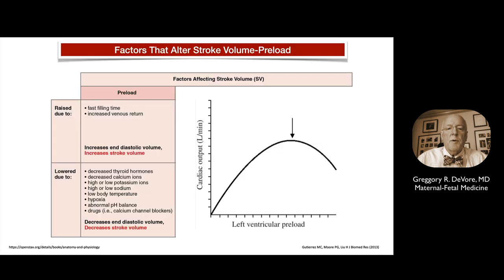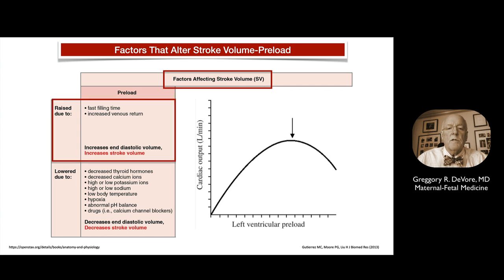This illustrates preload factors that alter stroke volume. If the preload or amount of blood entering the ventricles is increased, this results in an increased stroke volume and cardiac output. Conversely, factors that decrease preload, such as hypoxia, result in decreased stroke volume and cardiac output. The Frank-Starling curve illustrates that as the preload increases, cardiac output increases. However, there is a critical point at which further increases in preload result in decreased cardiac output.